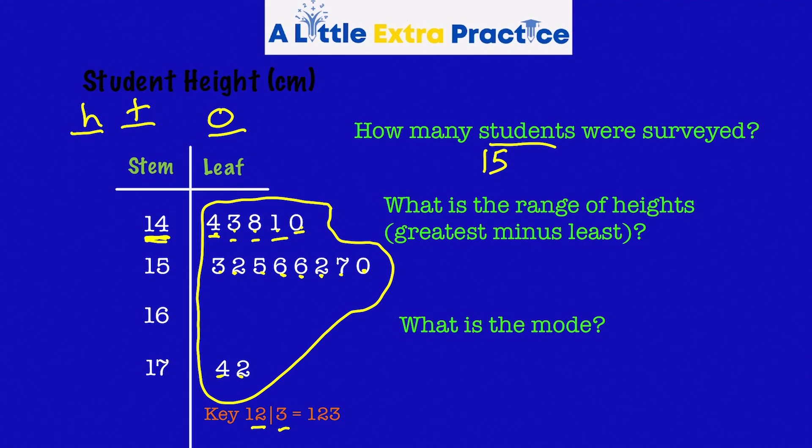Next one, what is the range of heights? The greatest minus the least. Well, the greatest looks like it's 174. The least looks like it's 140. Subtract, and we have 34. So the range in height from the shortest student to the tallest student is 34 centimeters.